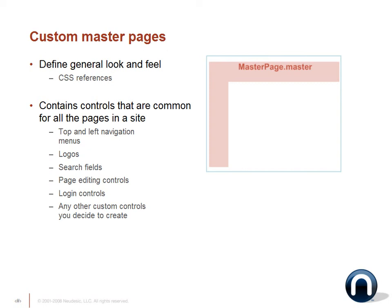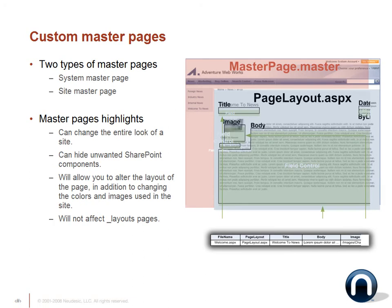Now we're going to talk about the SharePoint customization options. The key difference between SharePoint 2003 and SharePoint 2007 is the ability to do master pages and page layouts. MOSS 2007 is built off the .NET architecture. With custom master pages, you're able to define the general look and feel — it's style sheet driven. The master page includes common controls like top and left navigation, logo, search fields, page editing controls, login controls, and any other custom controls you create. There are two types of master pages: the system master page and the site master page. MOSS 2007 is much easier to customize than SharePoint 2003.